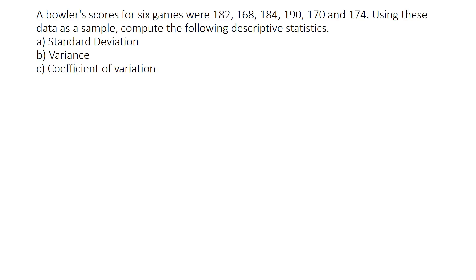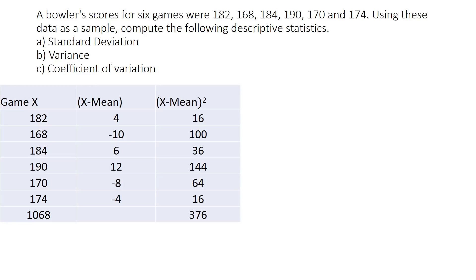The second question: a bowler's scores for six games were 182, 168, 184, 190, 170, and 174. Using this data as a sample, compute descriptive statistics — standard deviation, variance, and coefficient of variation. First, we calculate the mean. The total is 1068 and there are six games, so the mean comes to 178.